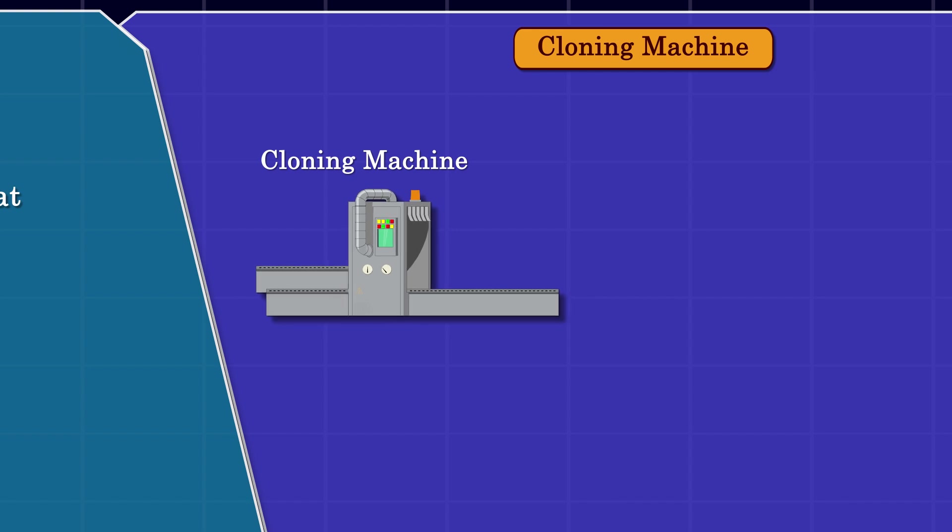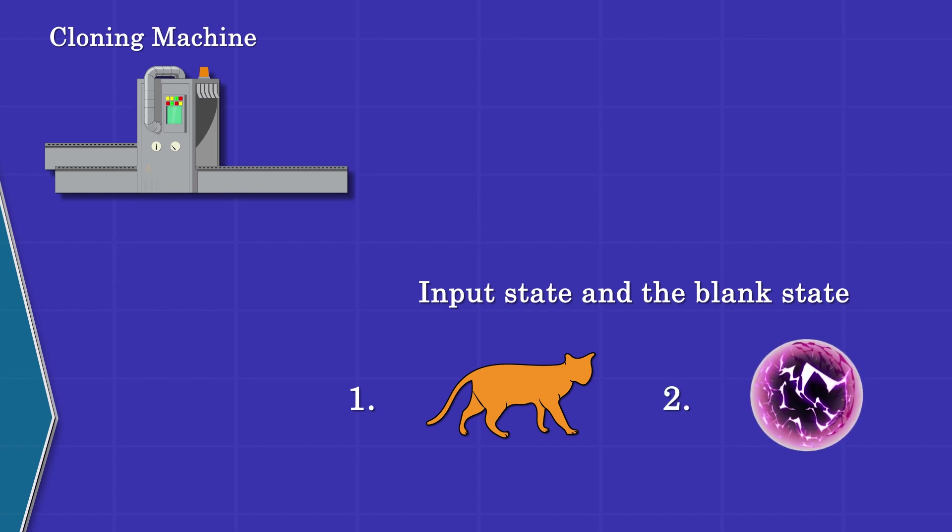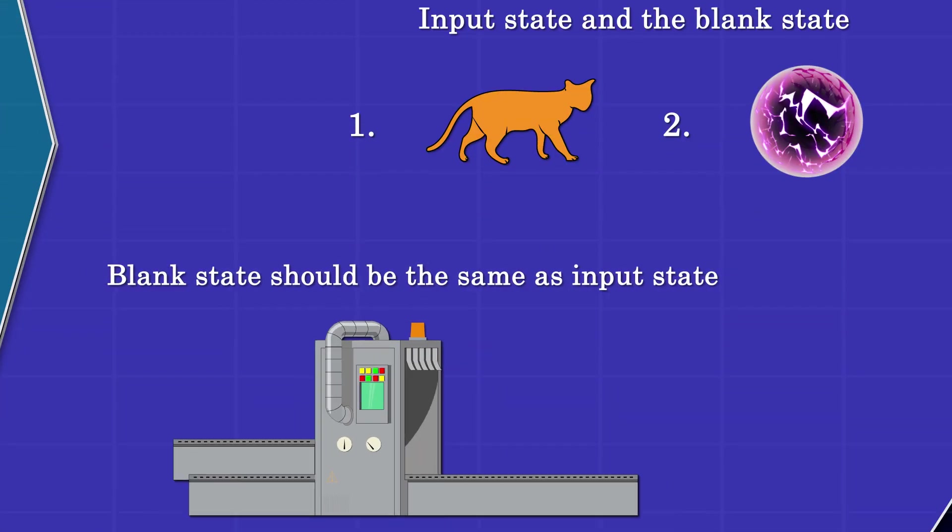The cloning machine itself has an input state and a blank state. The blank state should be independent of the input state without any prior knowledge of the input state. If the cloning machine is perfect, this blank state should be exactly the same as the input state.